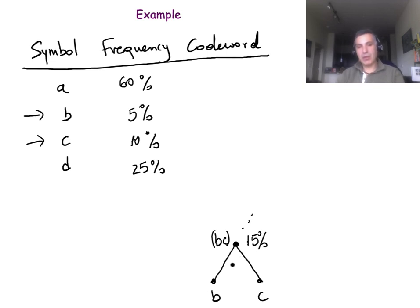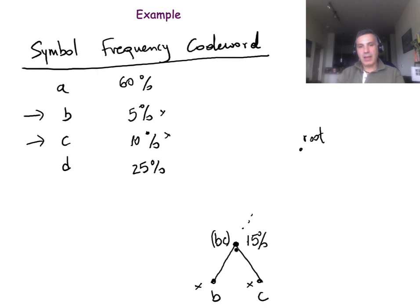Why is that? Because whenever we are trying to go from the root to either B or C, we have to traverse this node. So we are traversing this internal node 15% of the time. Now that we have this new symbol, we can essentially forget B and C. Imagine that our alphabet now doesn't include these two letters. We are applying the structural property we previously saw, and we ask: which are the two symbols with a minimum frequency at this point?